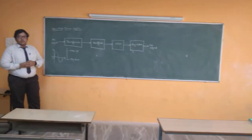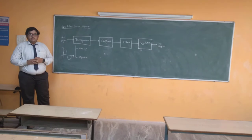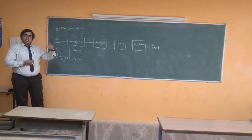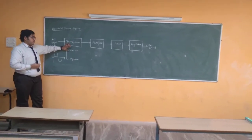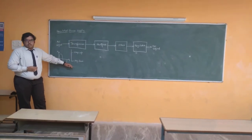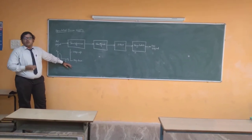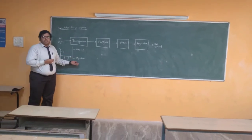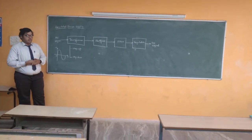Coming to the step-down transformer, here the transformer decreases the voltage of the input signal. For example, if we consider a 200-volt input supply, that can be decreased to around 5, 10, 15, 20 volts, etc. So these are the two operations of the transformer. As for this regulated supply, we will be using a step-down transformer because most electronic devices operate in a low-power supply mode. That is why we will be using a step-down transformer for this particular device.